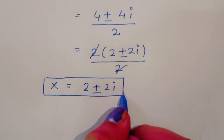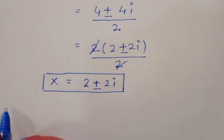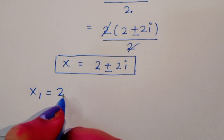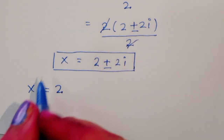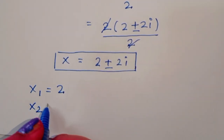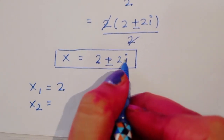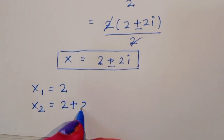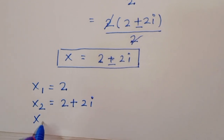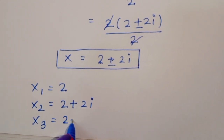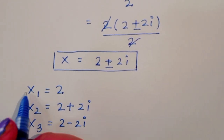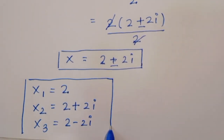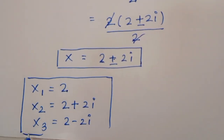So we get three values of x: x₁ = 2, x₂ = 2 + 2i, and x₃ = 2 - 2i. Now let's verify whether these are correct.